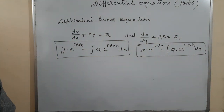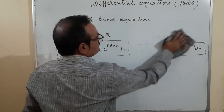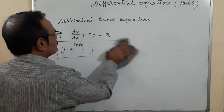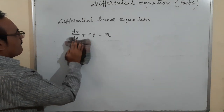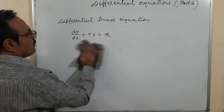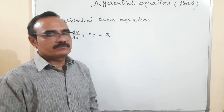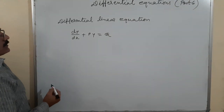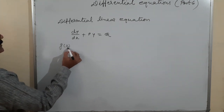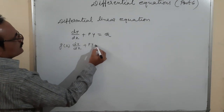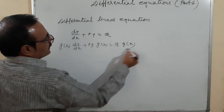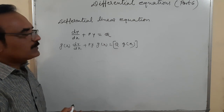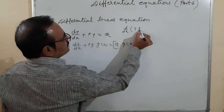Let us derive this solution. Starting with dy/dx + Py = Q, we multiply both sides by a function g(x): g(x) dy/dx + Py·g(x) = Q·g(x). We consider that Q·g(x) is the differentiable term of y·g(x).